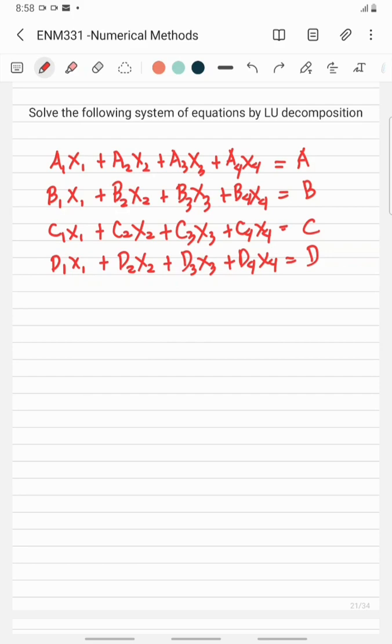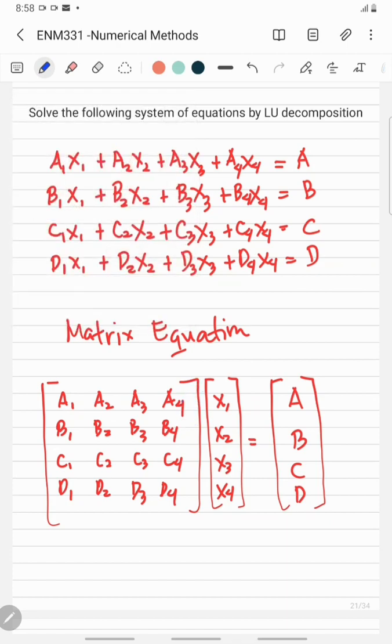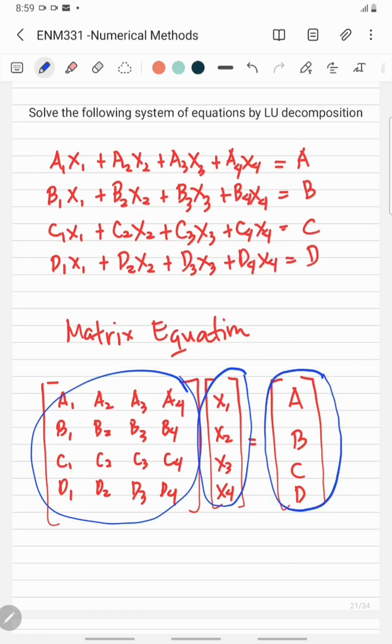We will rewrite this system of equations into a matrix equation. Our matrix equation is this one. This is our coefficient matrix, this is our variable matrix, and at the right side of the equation is the constant matrix.